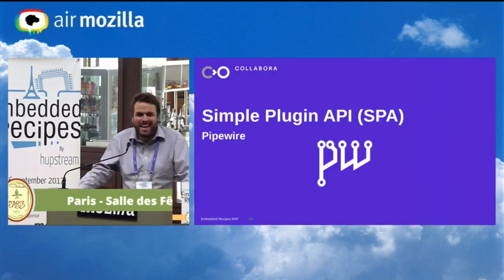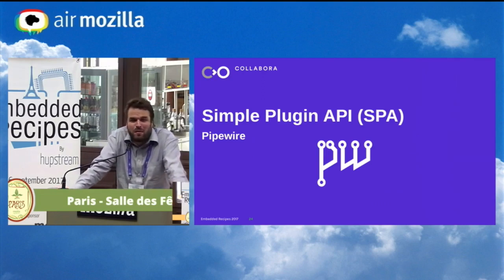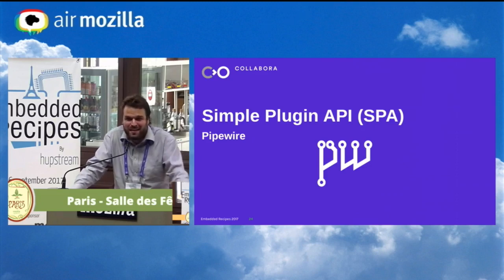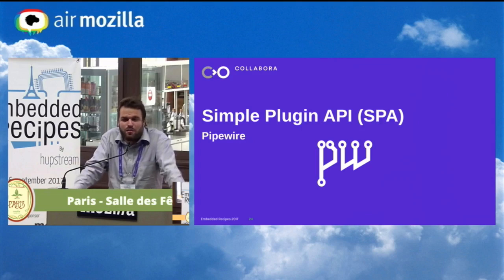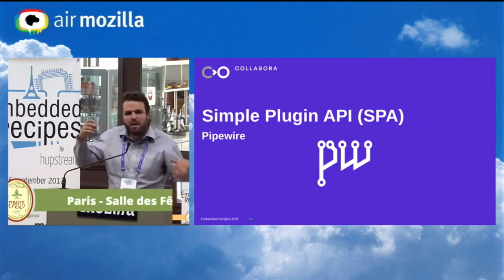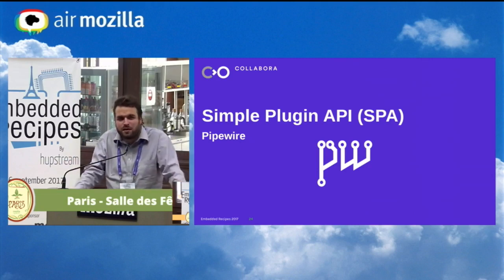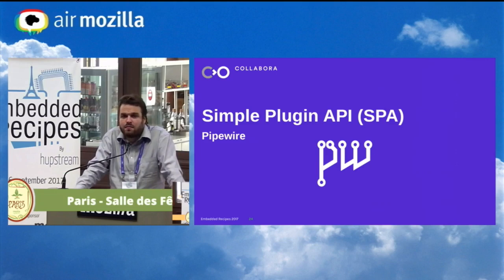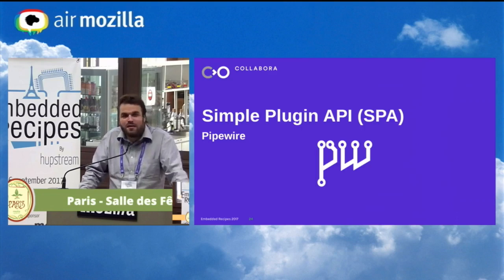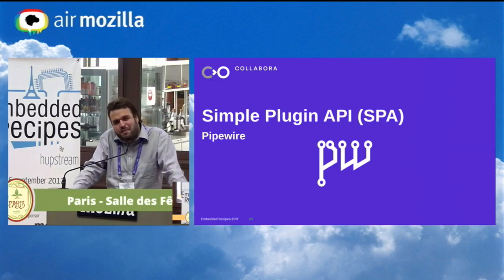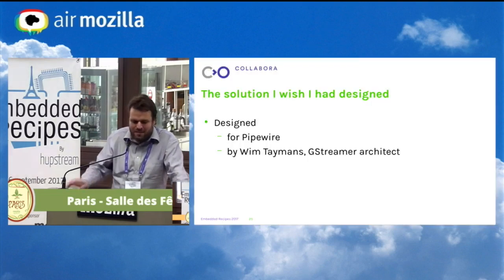Luckily, there is a solution — and I didn't make it. When I submitted this talk a couple months ago I was planning to come up with a solution myself. But in the meantime, someone else did all the same work and came up with a better solution. That person is Wim Taymans, the main architect of GStreamer, who is now working on something called PipeWire at Red Hat — a multimedia daemon and pipeline formation system that's real-time capable. In the process of creating that system, he designed a really simple plugin API that basically hits every single one of my requirements.